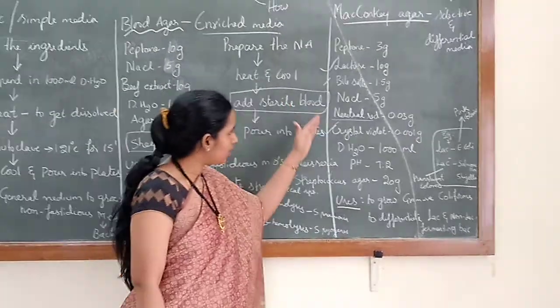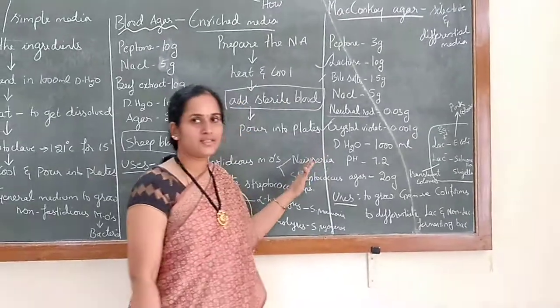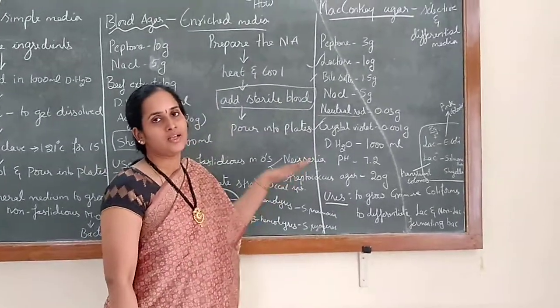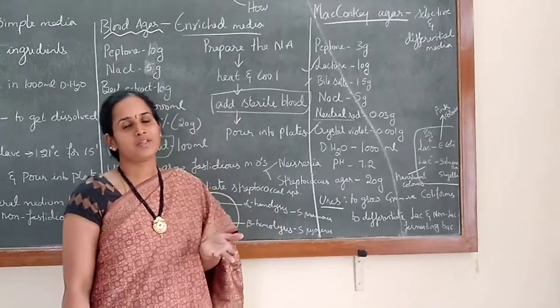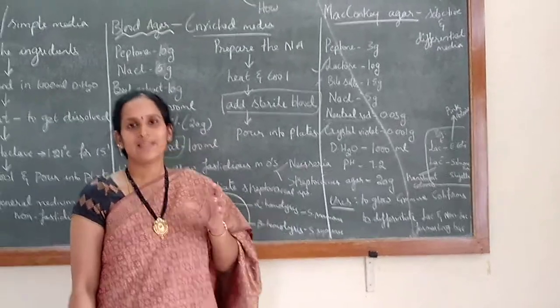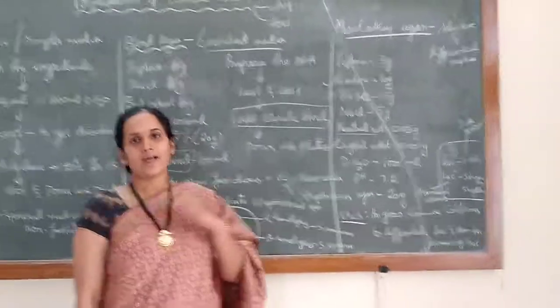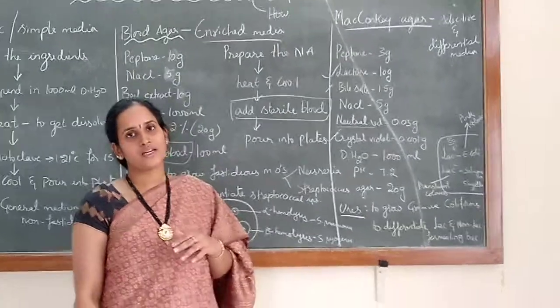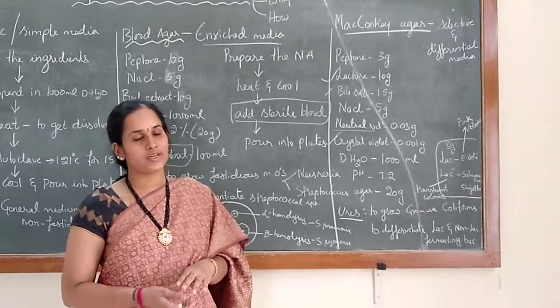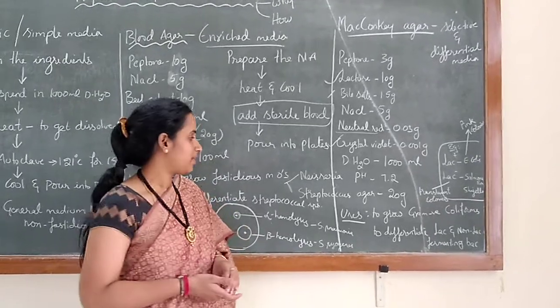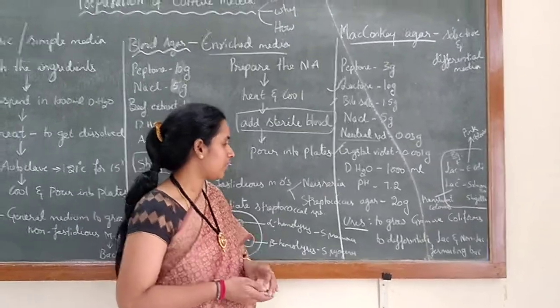To prepare MacConkey agar: weigh all ingredients separately, dissolve or suspend them in distilled water, heat it, and then give for sterilization. After cooling, pour it into petri plates.